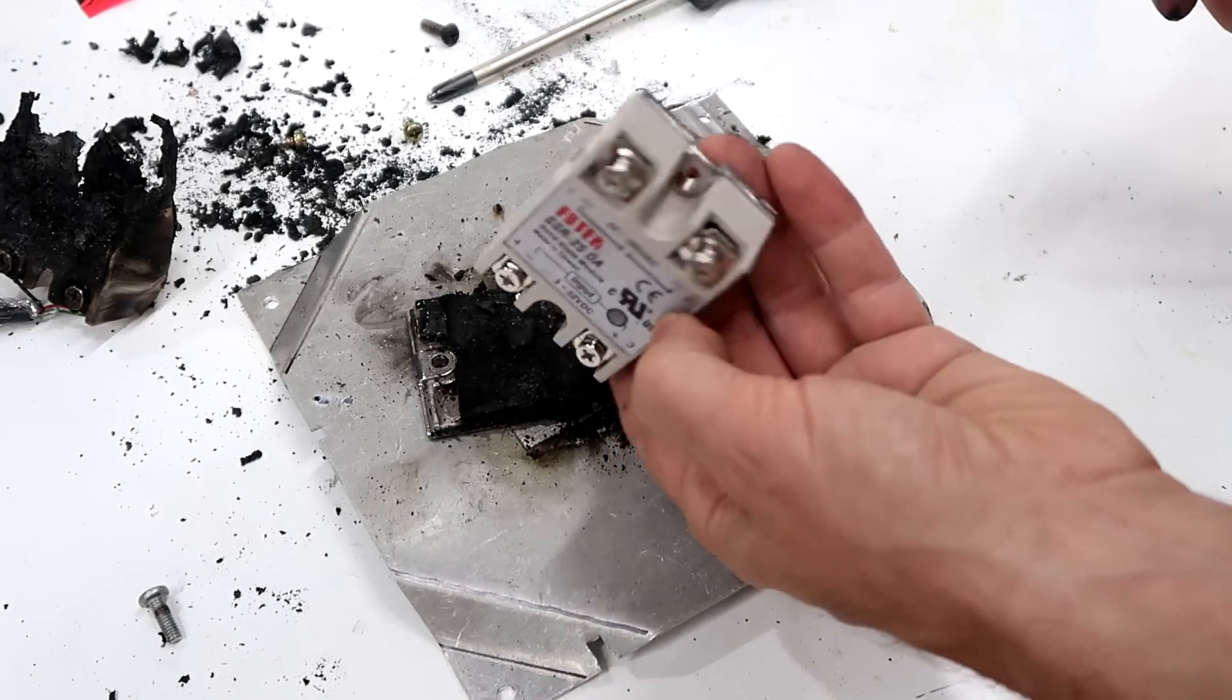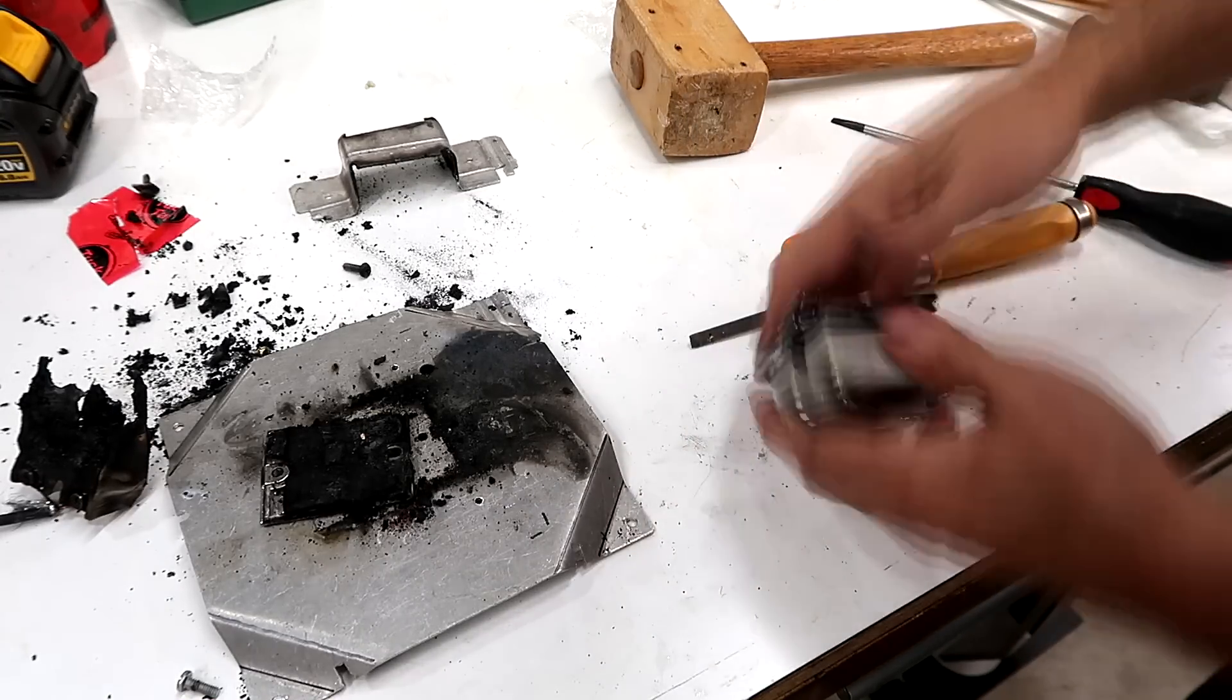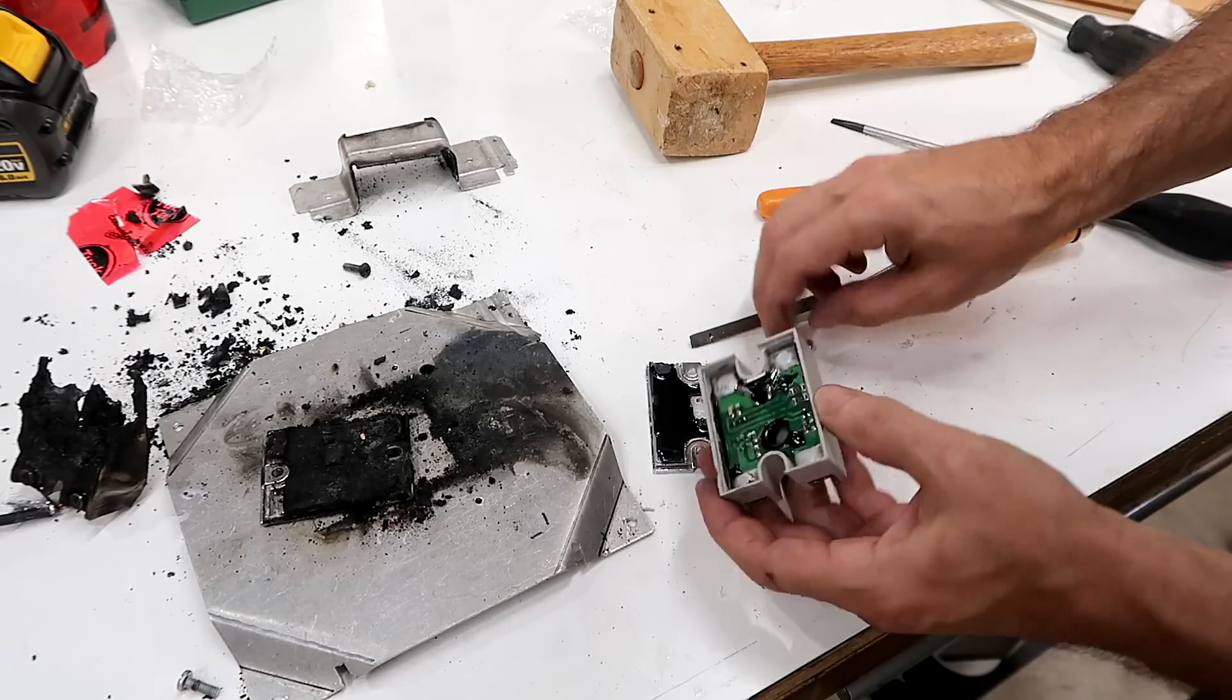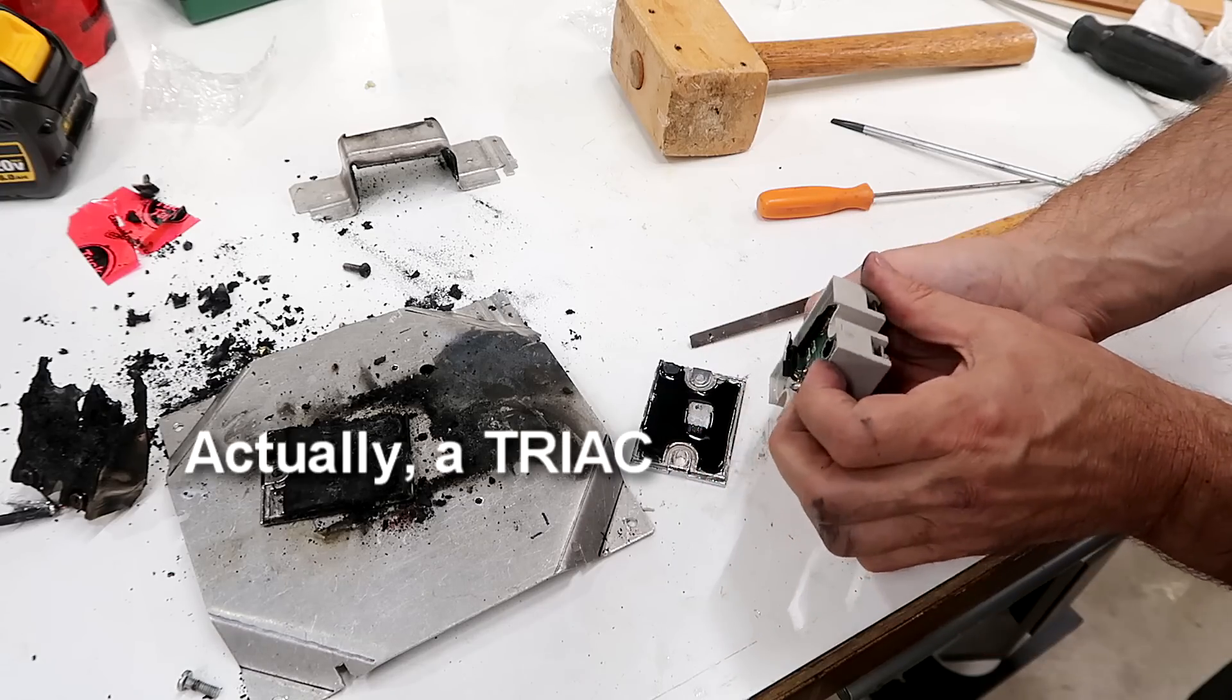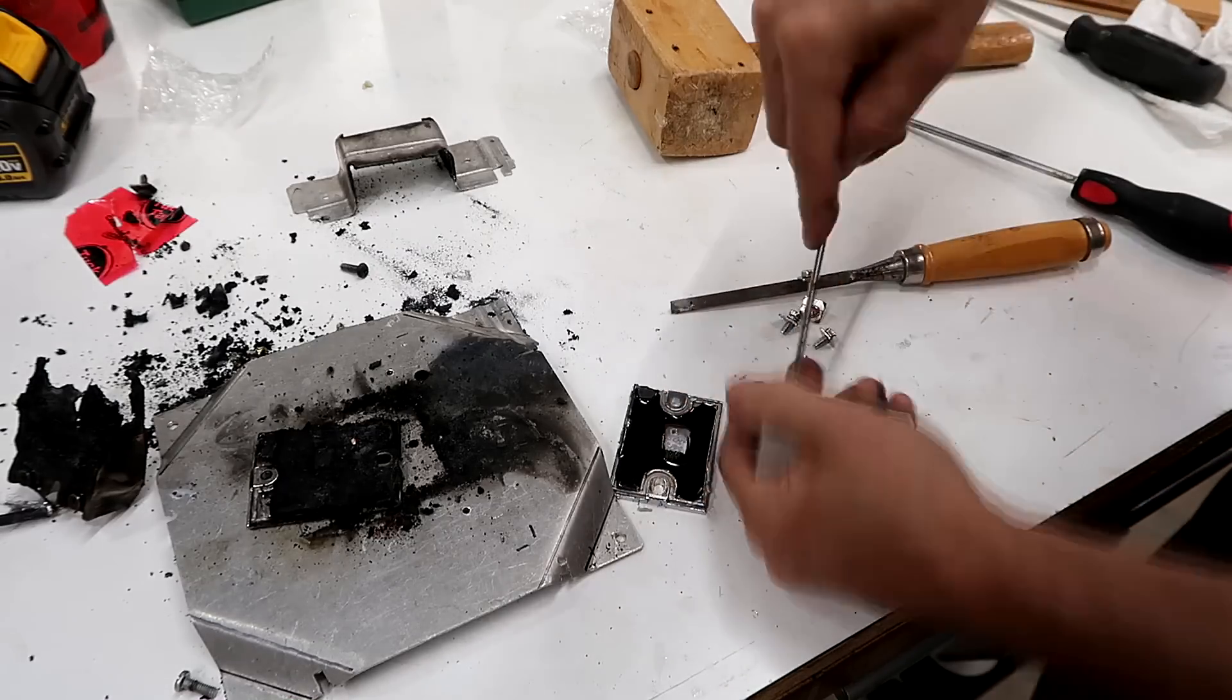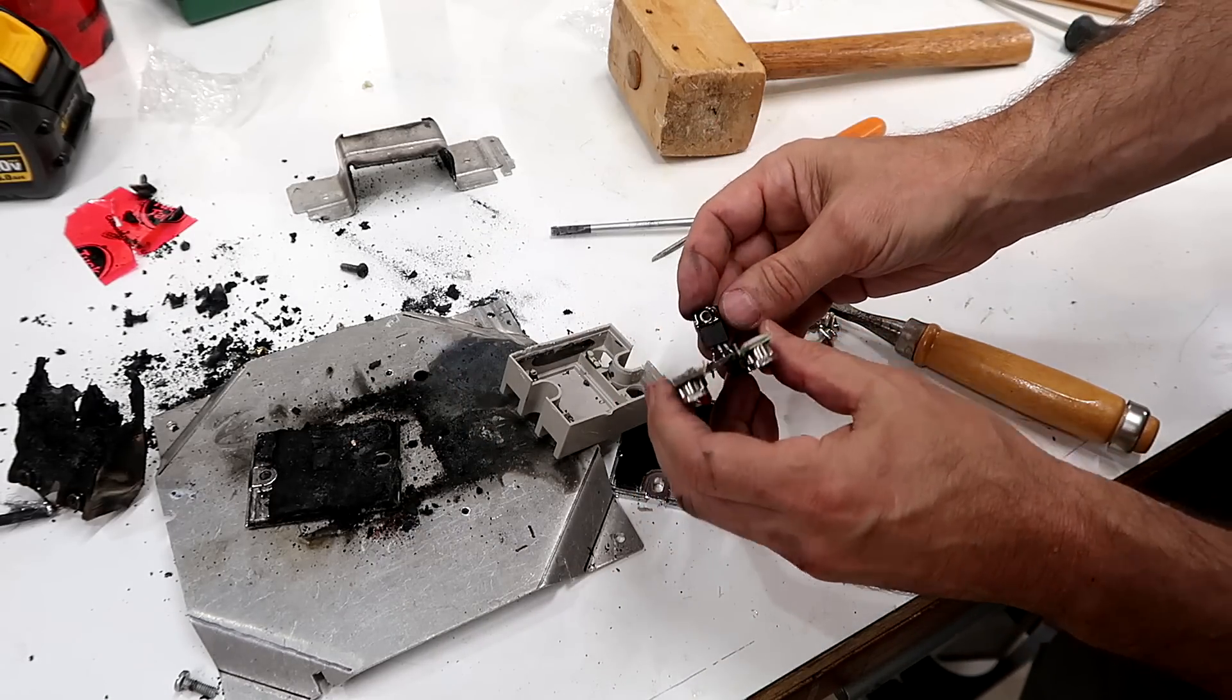I'm gonna pop open this one which is still good. So we have a little circuit board and one TO-220 type switching transistor. There's the relay guts, just a circuit board and one transistor here.